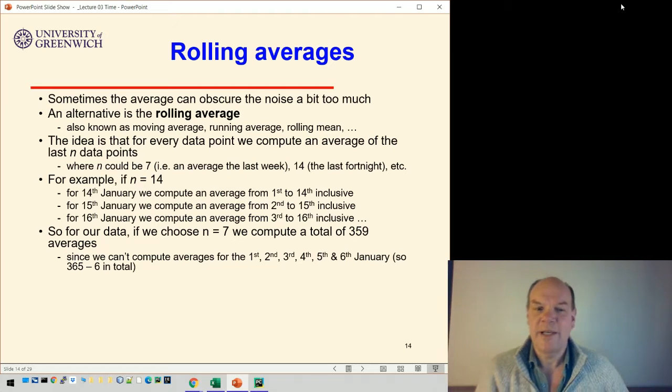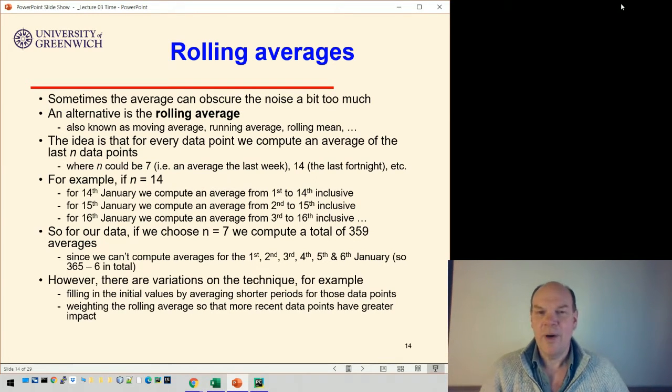For our data, let's for the sake of argument choose n is 7. From our data then we'll get a total of 359 averages because we start at 7th of January. We don't compute averages for the first, second, fourth, fifth, sixth, so we get 365 minus six in total. But there are ways of addressing that.